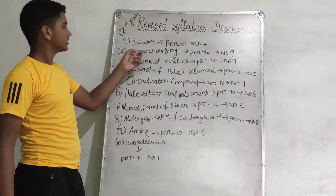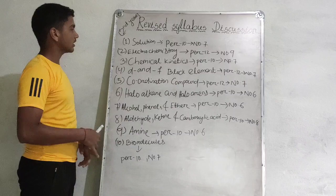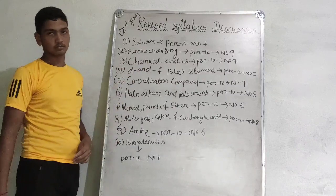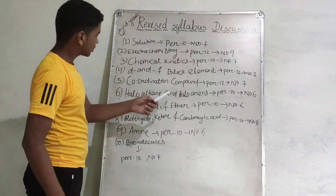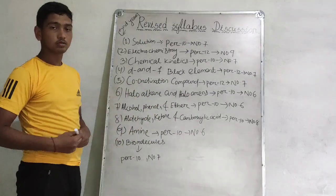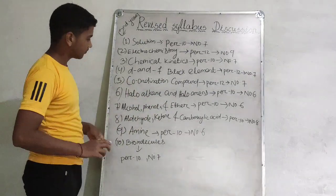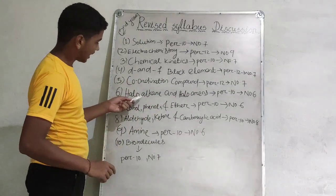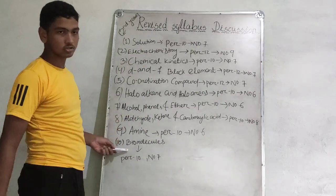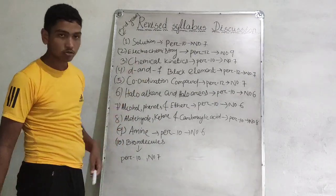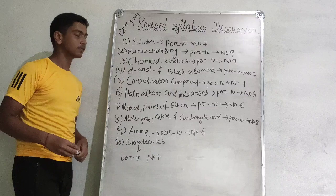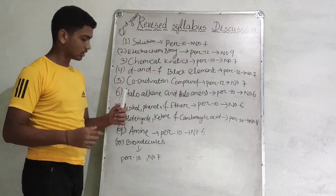The physical part is solid state and surface chemistry. The inorganic part is peep and general principle. Halalcene, halalcene, aldehyde and biomolecule. The organic part is called chemistry, epitial life and polymers.